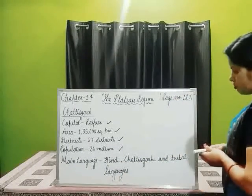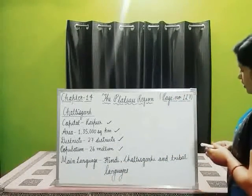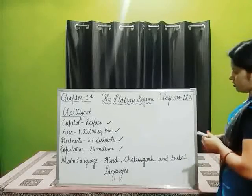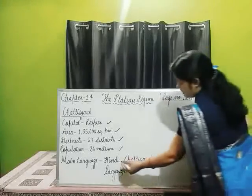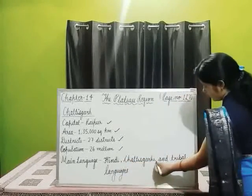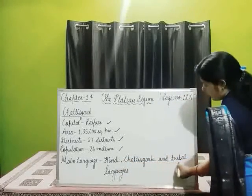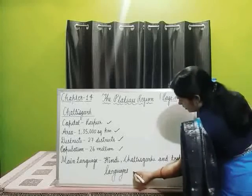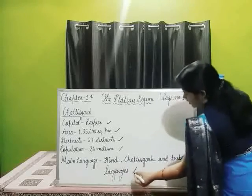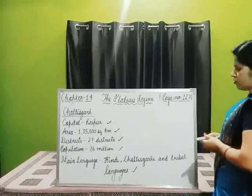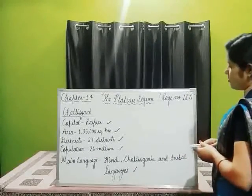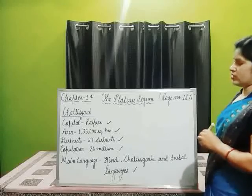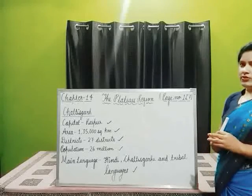The main languages spoken in the state of Chhattisgarh are Hindi, Chhattisgarhi, and some tribal languages. First, we will see the location of Chhattisgarh in the map of India.